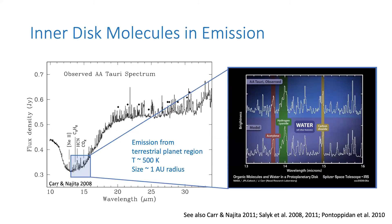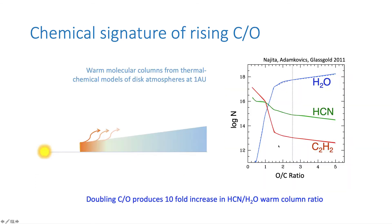Can we decode the chemical signatures encoded in mid-infrared molecular spectra? When we look at the mid-infrared spectra of disks, they're very rich — features of water, emission features of acetylene and hydrogen cyanide, and many other things. One thing this group of diagnostics — water and organic molecules — is good for is to probe a changing C-to-O ratio in the disk. As the C-to-O ratio rises, we expect the abundances of organic molecules to go up and the abundances of water to decline. The ratio of organics to water should be very sensitive to a changing C-to-O ratio.